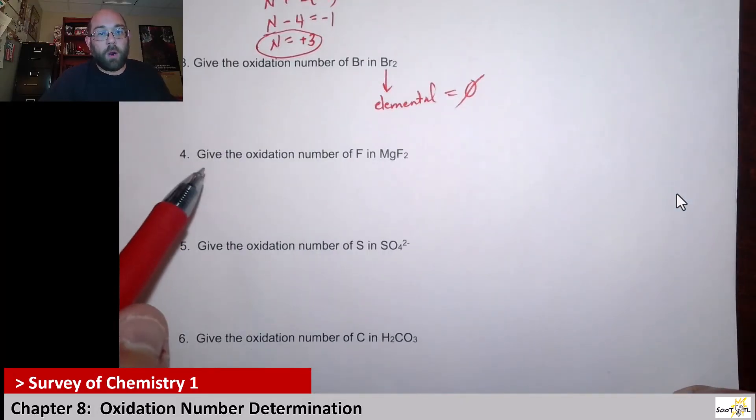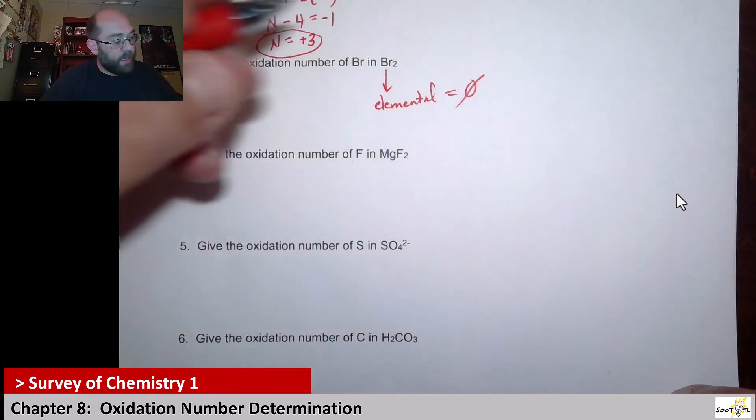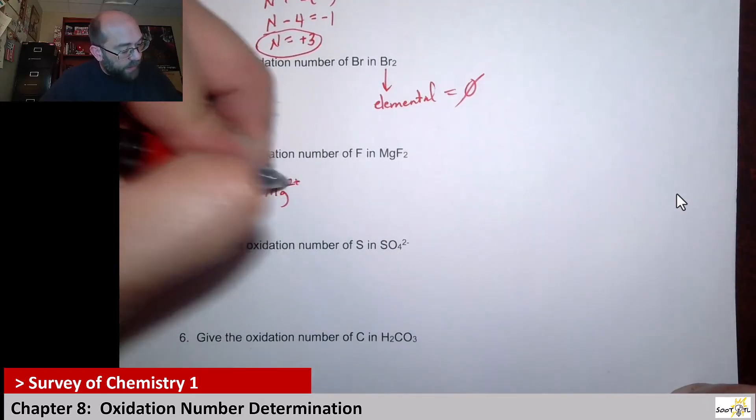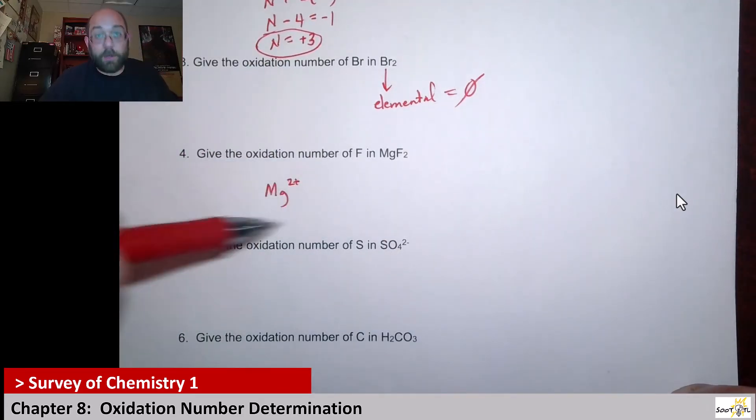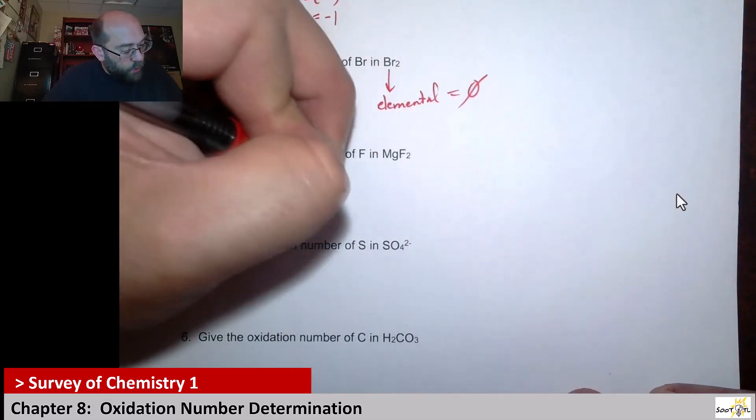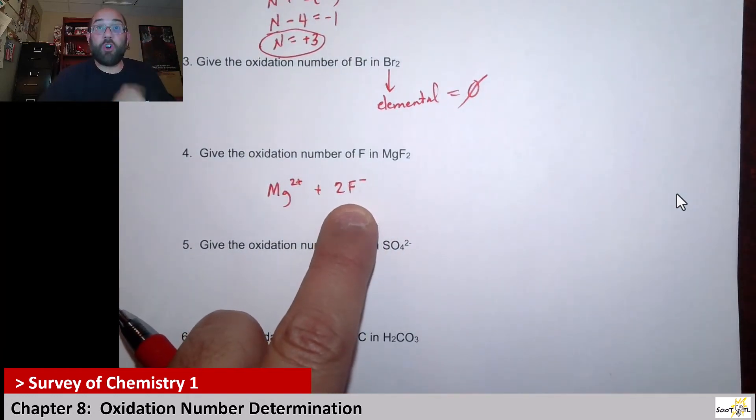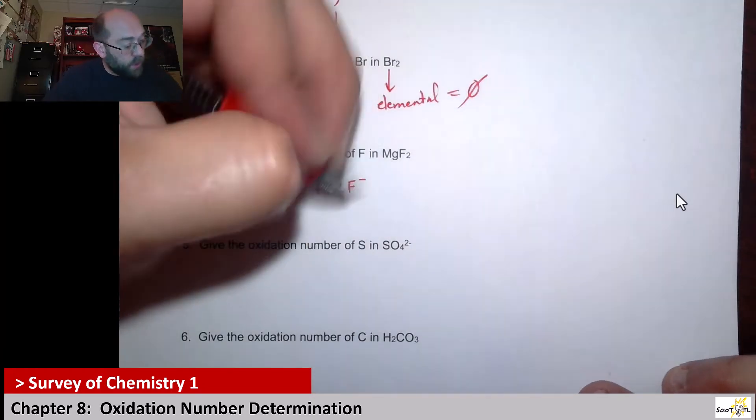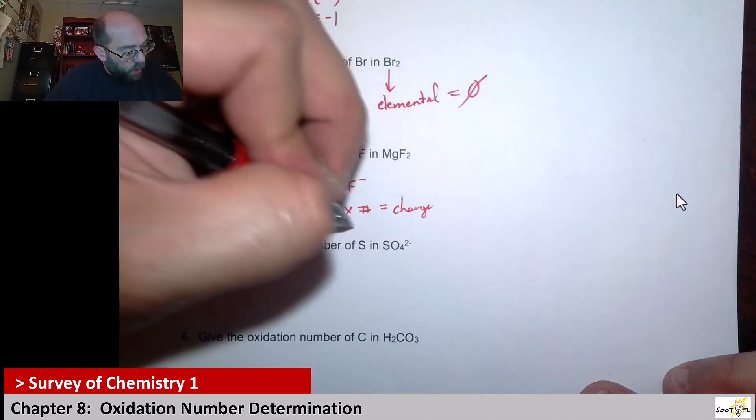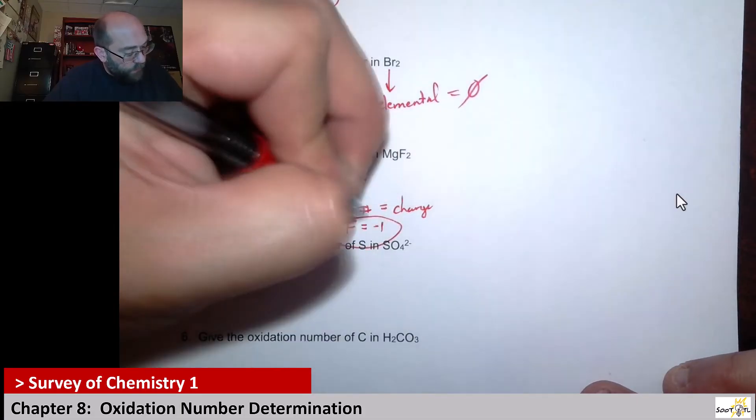For fluorine in magnesium fluoride, we know that this is an ionic compound—a metal and a non-metal together. So you have magnesium 2+ based off of its placement on the periodic table in the second column, and then you have two of these fluoride ions. Because we know it's a monatomic ion, its charge is its oxidation number. Therefore, oxidation number equals charge, so the fluorine is equal to negative one.